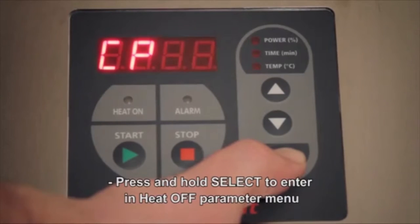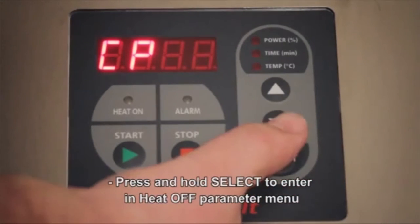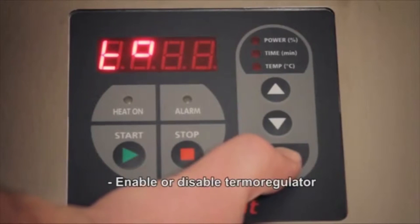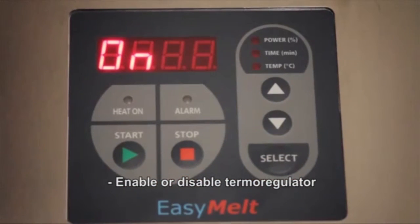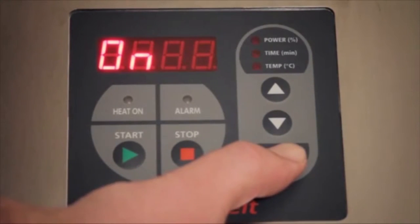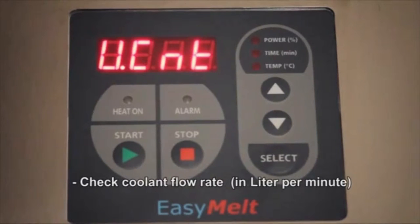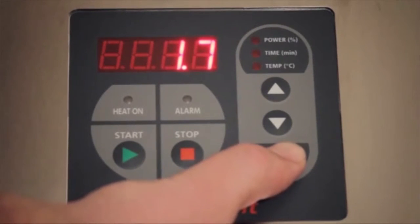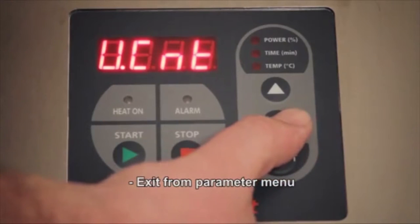Press and hold select to enter heat off parameter menu. Enable or disable thermal regulator. Check coolant flow rate. This is in liters per minute. Exit from parameter menu.